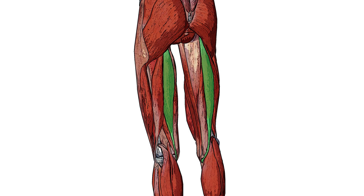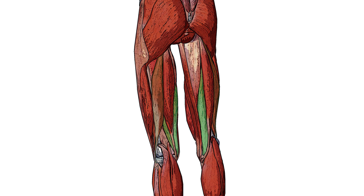You can see pictured here the semitendinosus muscle. Some muscles close by are the biceps femoris muscle and the semimembranosus muscle. If I bring in the semitendinosus muscle now, you'll notice that the semitendinosus sits on top of the semimembranosus muscle. So again, we can see just the semitendinosus muscle in isolation.